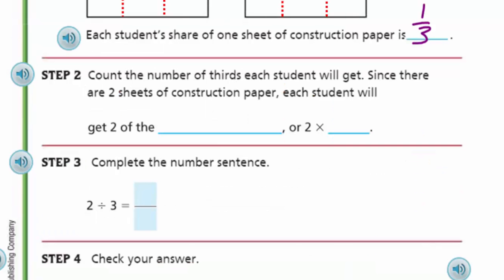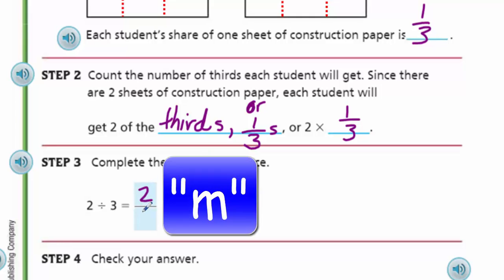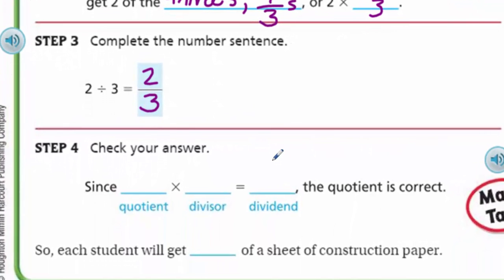Step two says, count the number of thirds each student will get. Since there are two sheets of construction paper, each student will get two of the thirds. Complete the number sentence. So, two divided by three is two-thirds. Isn't this easy? The two sheets of paper divided by three. We end up with the answer is two-thirds.